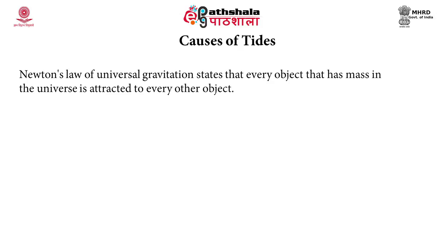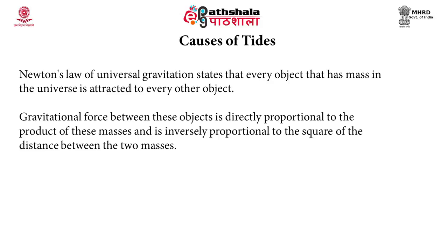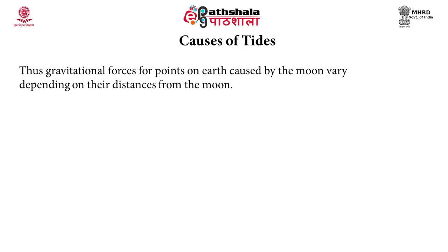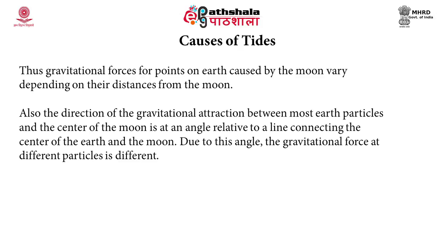Let us see what are the causes of tides. Newton's law of universal gravitation states that every object that has mass in the universe is attracted to every other object. The gravitational force between objects is directly proportional to the product of their masses and inversely proportional to the square of the distance between them. Thus, gravitational forces for points on earth caused by the moon vary depending on their distances from the moon, and the direction of gravitational attraction between most earth particles and the centre of the moon is at an angle relative to a line connecting the centres of the earth and moon, making the gravitational force at different particles different.